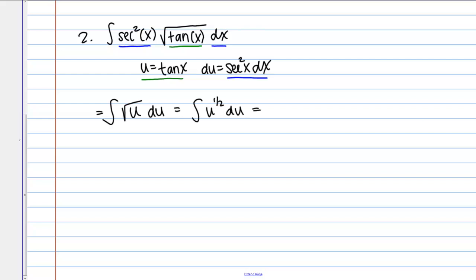This is something I know how to take the antiderivative of. Add a power becomes u to the three-halves over three-halves plus C. That's two-thirds u to the three-halves plus C. I always need to remember to substitute so that I have my original variable again. U is tangent of x. Two-thirds tan x to the three-halves power plus C would be my final answer.